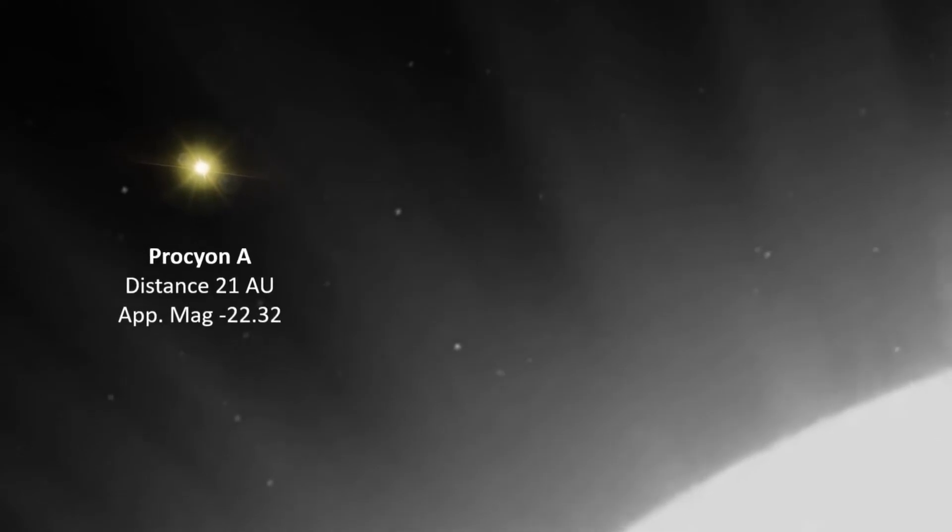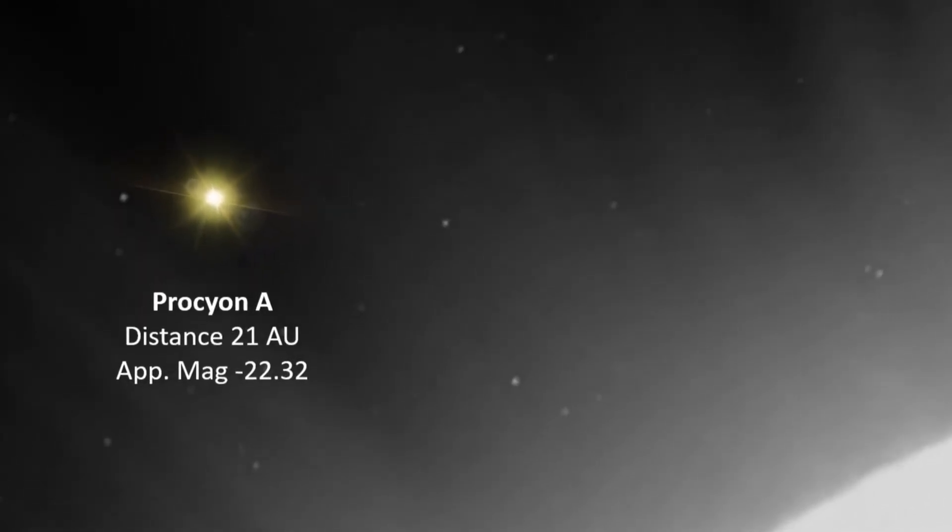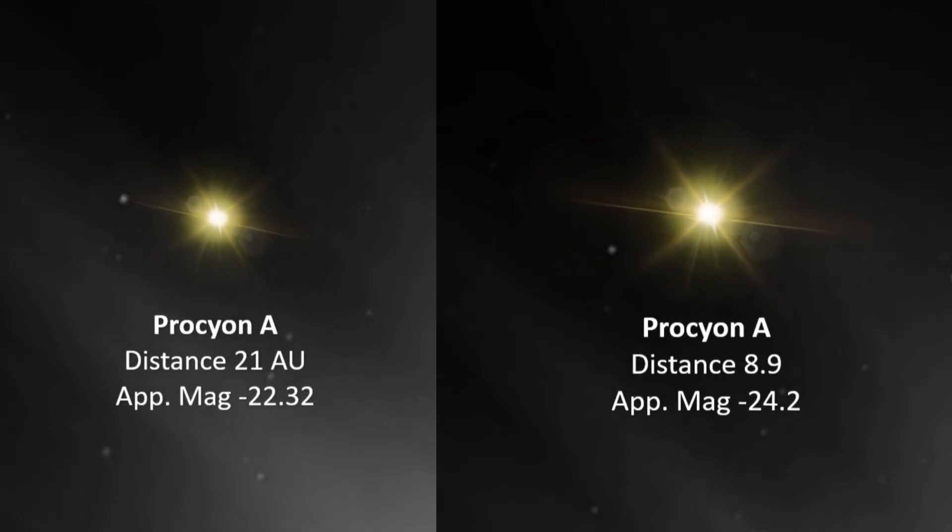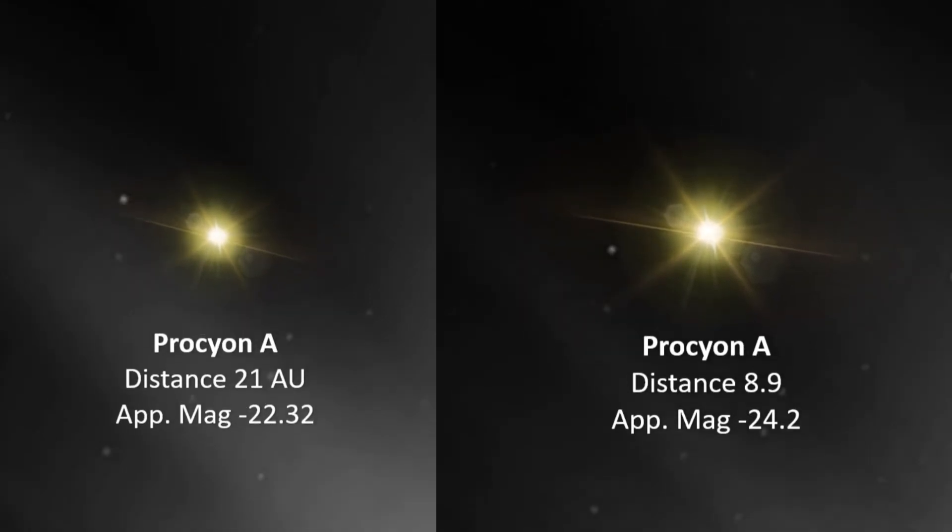At aphelion or most distant, it would dim to minus 22.32, which is roughly the same amount of light as at Saturn, but again at twice the distance.